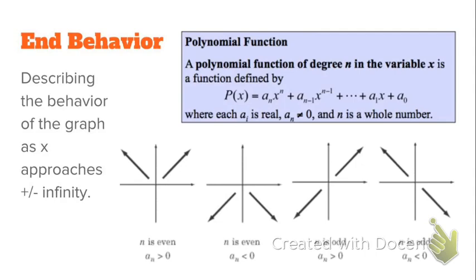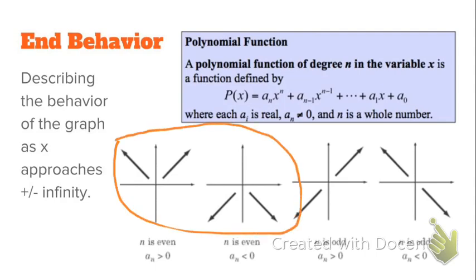When we describe end behavior, we describe what's happening as x approaches infinity and negative infinity — so as it's going to either extreme of the graph. If you look at these pictures down here, whenever the degree of the polynomial is even, like a quadratic or a fourth degree polynomial, the end behavior is going to go in the same direction — either both up to the right and left, or down to the right and left. And if it's odd, think opposite — polynomials of odd degree will have end behaviors in opposite directions.